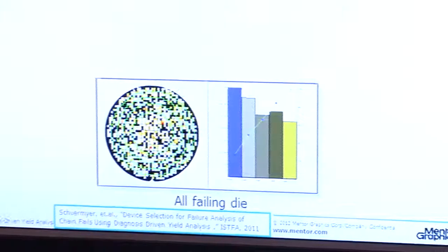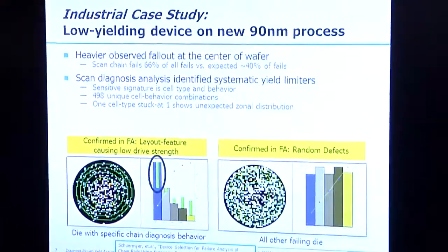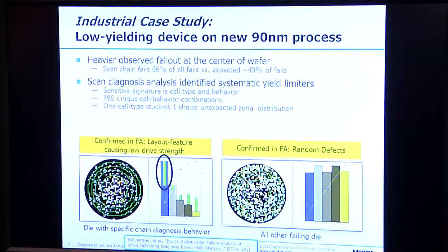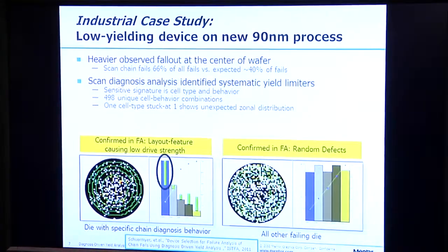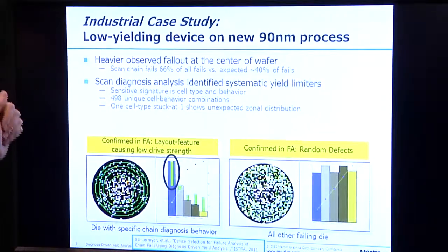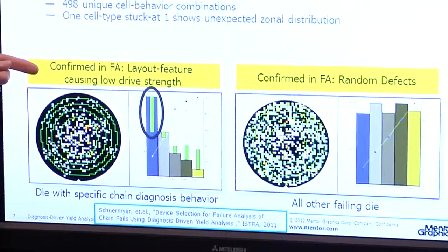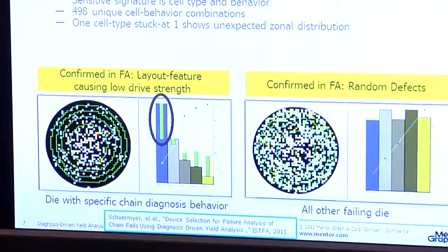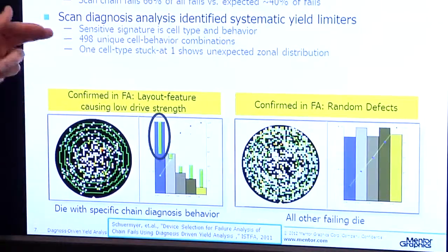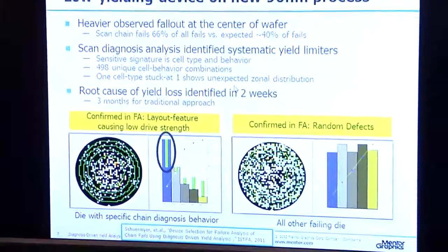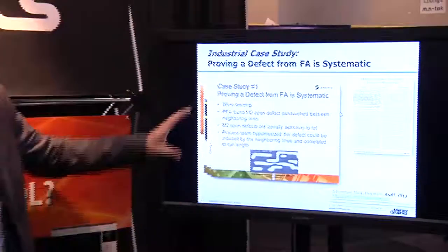We've done several publications on this. This is from a paper published at ISVTS in 2011. The challenge was that we saw a slight increase in fallout in scan chain failures. Using Yield Insight, we were able to identify that failures associated with one particular type of scan cell were clustered in the center of the wafer. We were then able to send some of those devices to FA, find the issue, and resolve the yield problem in less than two weeks, rather than three months with a regular approach.